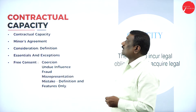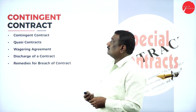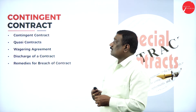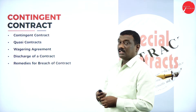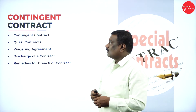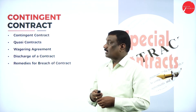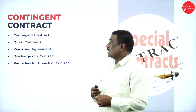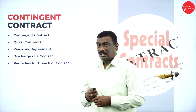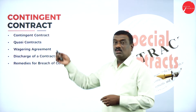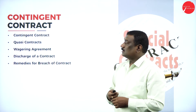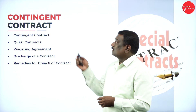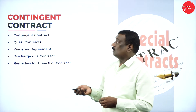Coming to the third unit, Contingent Contract: here you will understand the meaning of contingent contract, the meaning of quasi contracts, wagering agreements, discharge of contract, and remedies for breach of contract. These are the various sub-topics covered under this unit.